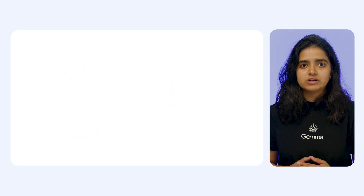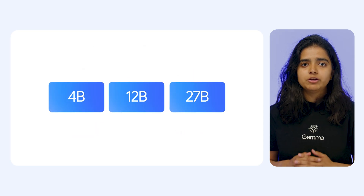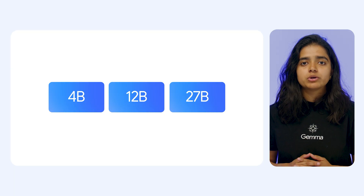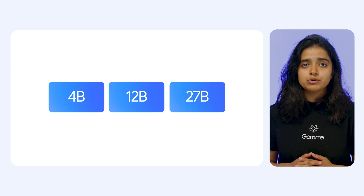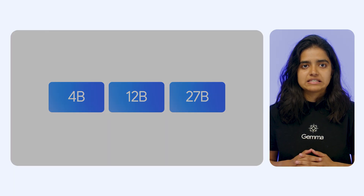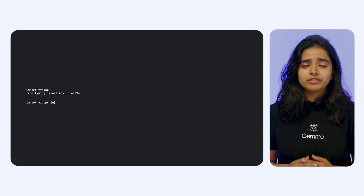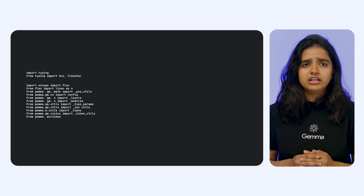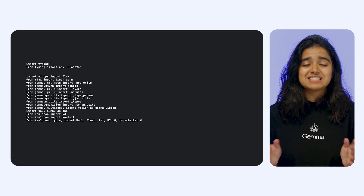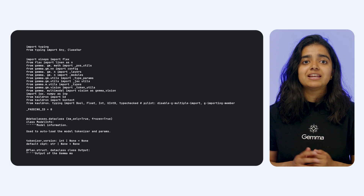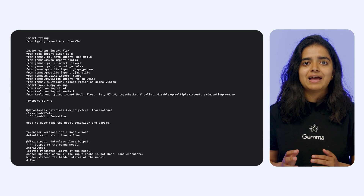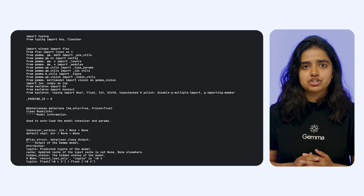In the Gemma 3 family of models, the 4, 12, and 27B parameter models are trained to effectively handle a 128,000 token context length. To put that into perspective, that's roughly equivalent to about 6,500 lines of code or the entire text of an average length English novel.